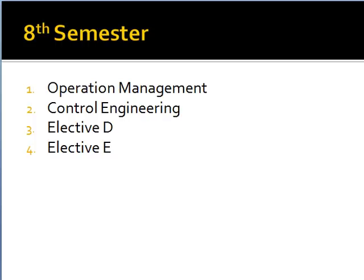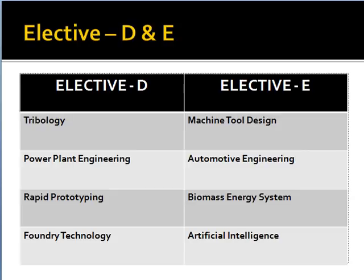In the final semester, there are only four subjects depending on the college: operation management, control engineering, elective D, and elective E. In group D, you can choose tribology, power plant engineering, rapid prototyping, or boundary technology. For elective E, you can choose machine tool design, automotive engineering, biomass energy system, or artificial intelligence. Note that the subjects listed in the electives are very few — there are plenty of elective subjects which you can choose from.